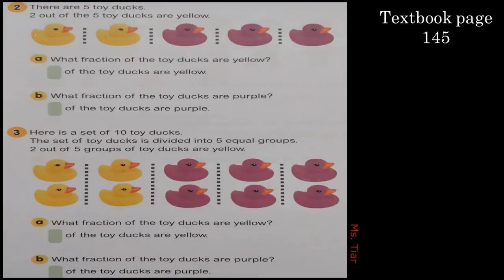Question number two: there are five toy ducks. Two out of the five toy ducks are yellow. What fraction of the toy ducks are yellow? We have two out of five. What fraction of the toy ducks are purple? We have three out of five — so we have three-fifths.